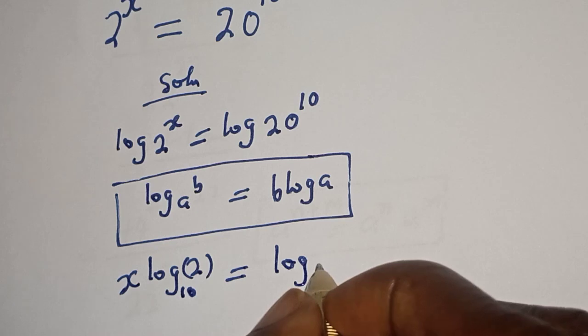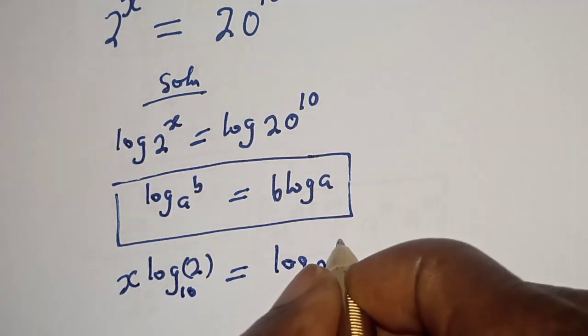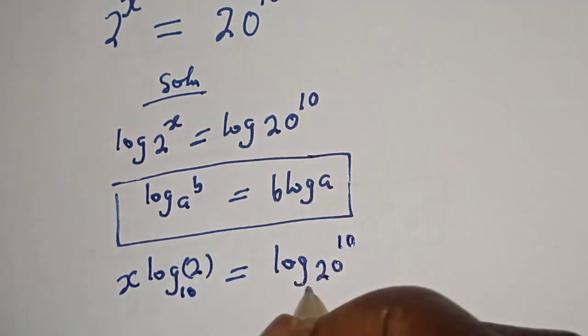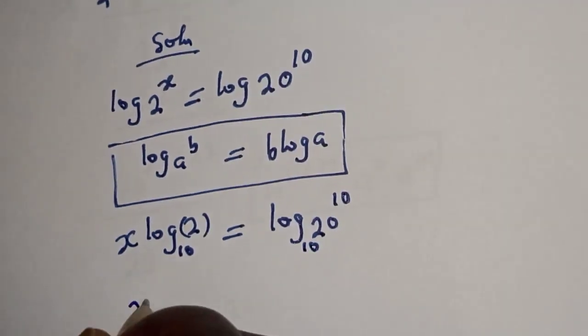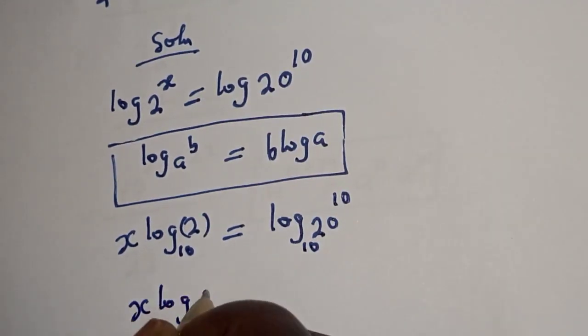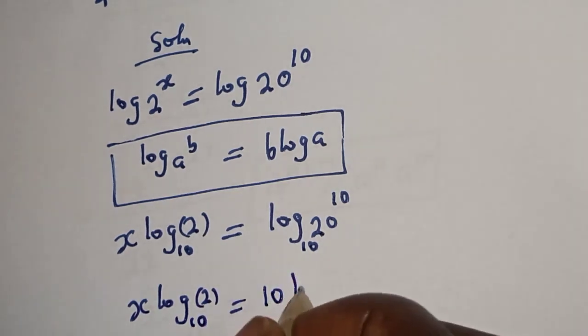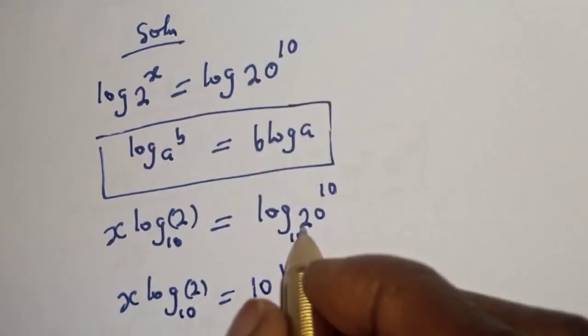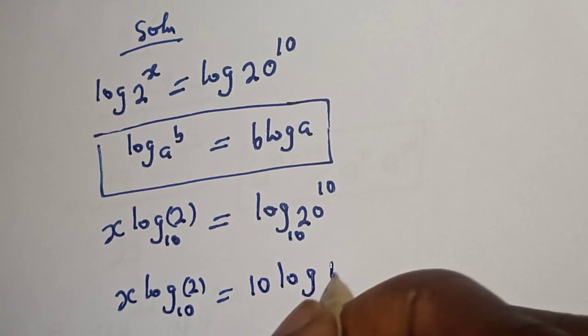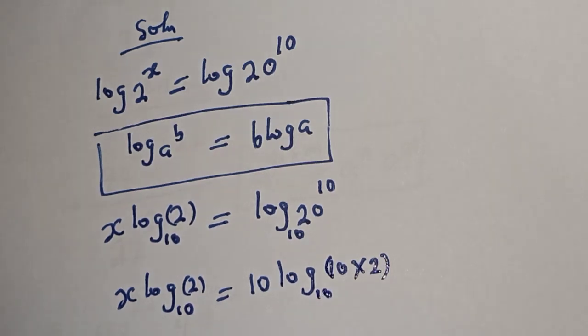Then x log 2 base 10 is equal to 10 log 20. Log 20 can be written as 10 times 2 base 10.